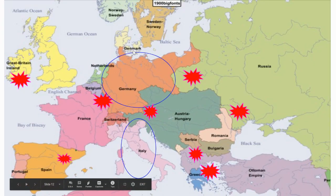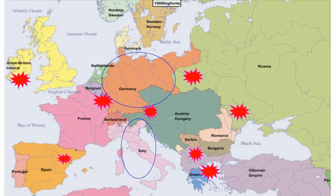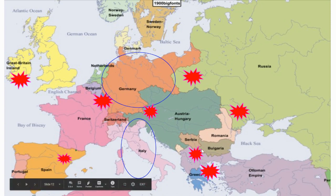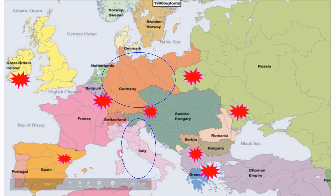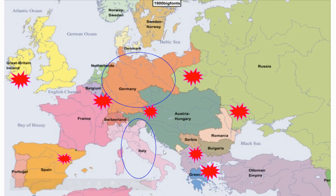To review: we have nationalist movements all over. Ireland wants to break away from the British. The Poles and Ukrainians are trying to break away from the Russians. The Serbs and Greeks are actually successful breaking away. The Czechs and Hungarians are trying to break away from Austria. There are other movements in the Low Countries trying to break away from various empires. And then we have the unification of Germany and Italy. That's what's going on with nationalism in Europe.